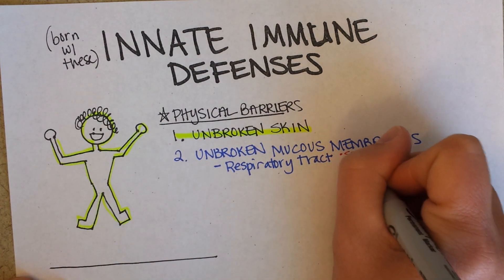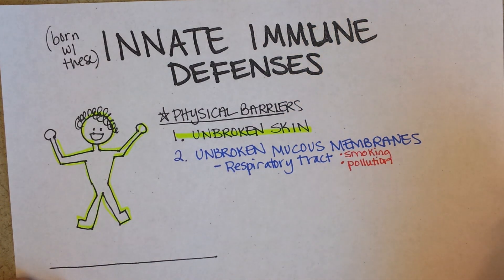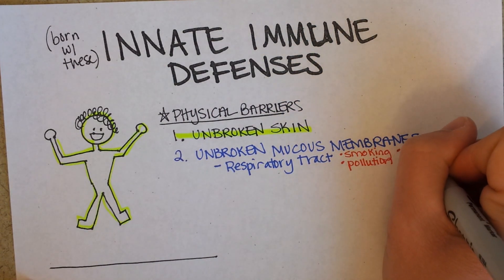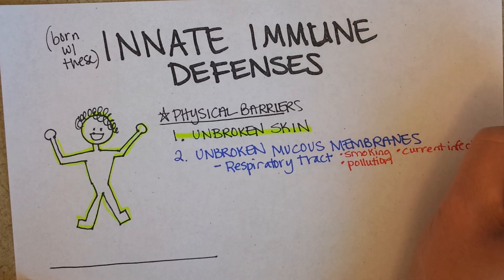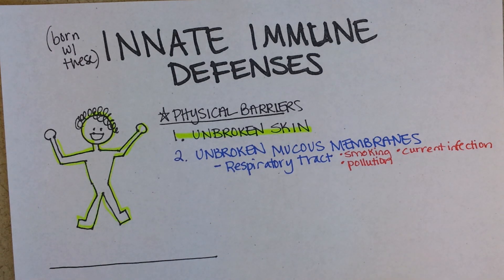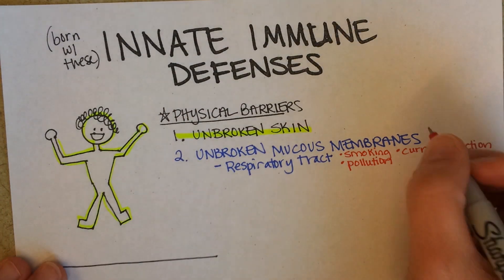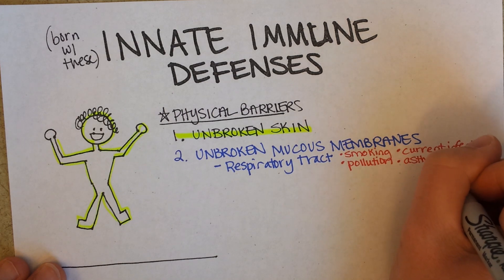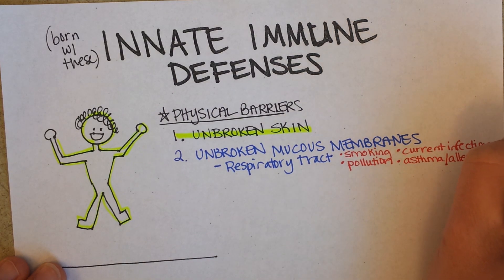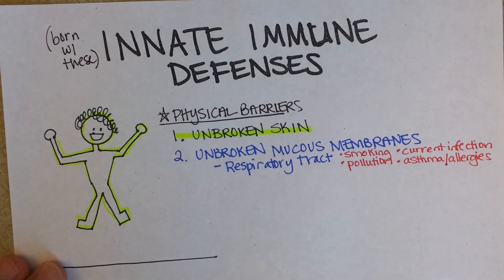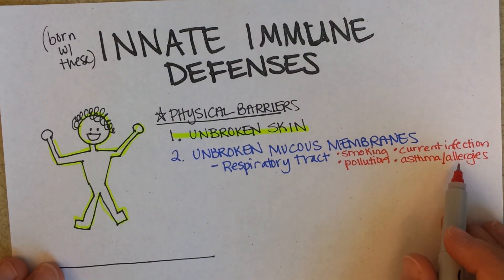Other things that can damage the respiratory tract include pollution in the air, and already having an infection — for example, a rhinovirus or cold. That inflammation and potential damage to cells lining the respiratory tract can make it more likely that a person gets a bacterial infection. So a viral infection can set the stage for a secondary bacterial infection. Asthma and allergies also represent chronic damage in the respiratory tract that increases infection risk.